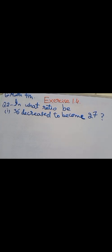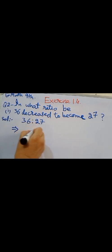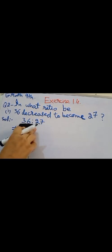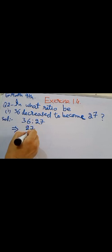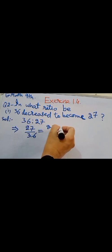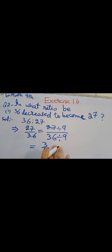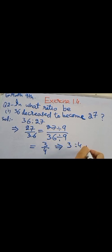In this question, we solve a ratio between 36 and 27. First we write the solution: 36 ratio 27. We write it as 27 over 36, because 36 is greater than 27. Next we divide both numbers by 9, giving us 3 over 4, and this gives us a ratio of 3 ratio 4. That is our answer.